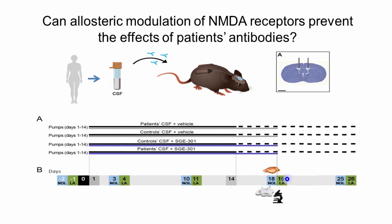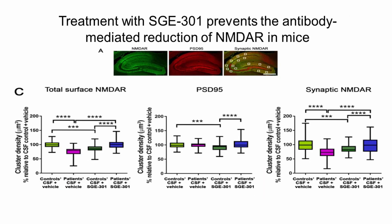On day 18, which is the time in this model when animals have the most deficits, the brains were collected and examined. The studies shown here demonstrate that patients' CSF antibodies cause a substantial decrease of NMDAR receptors compared with control CSF. However, this effect was prevented when animals received SAGE 301, as shown here. The same effect was observed when we examined the synaptic NMDAR receptors.